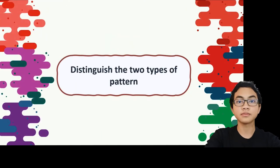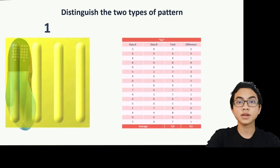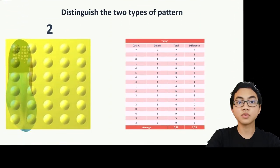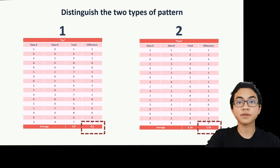Beyond distinguishing between guiding block and normal paving, how do we differentiate between the two types of guiding block? We know that guiding blocks have two different patterns: the go pattern and the stop pattern. Because the two paving pieces have different patterns, another thing that needs to be calculated besides the total buttons pressed is the difference between data A and data B. Based on this data, both types of paving have the same total button count of 6, but the difference between data A and data B differs, which can be used as a benchmark to distinguish the two types.